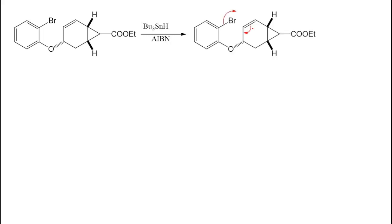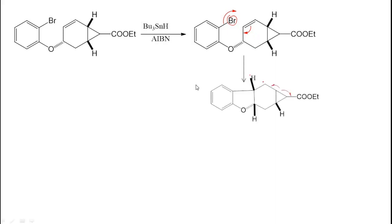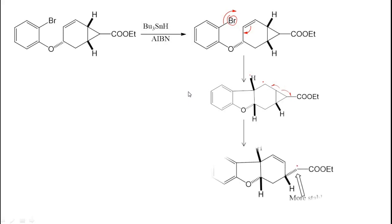So listen here: this bromine will be removed, this double bond shifts here, and a free radical will be formed. This on cyclisation gives the product like this. Again, this rearranges to give the product like this, and this is the most stable radical.